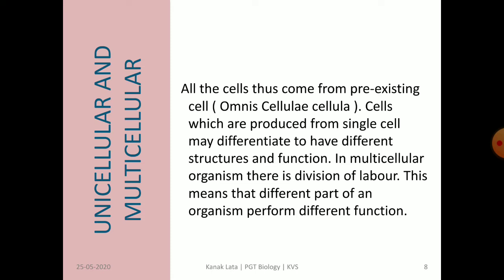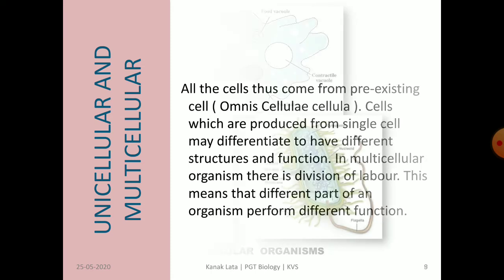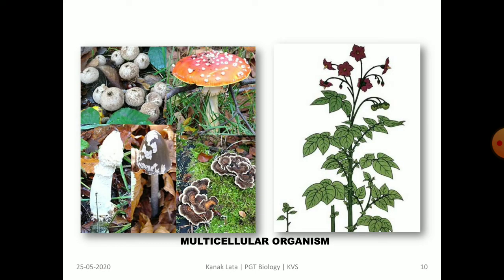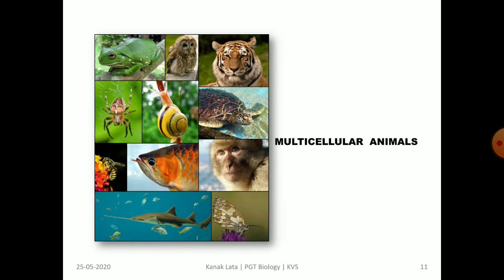All cells come from pre-existing cells — omnis cellula e cellula. Cells produced from a single cell may differentiate to have different structures and functions. The given figures show different unicellular organisms: amoeba, euglena, and bacteria, as well as different multicellular organisms.